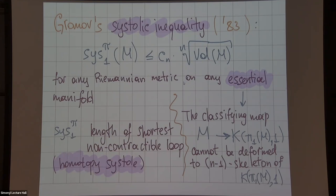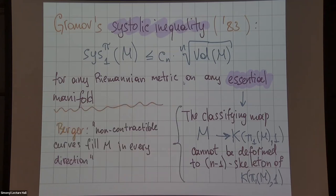Essential here means the rigorous definition says that the classifying map from your manifold to the classifying space of the fundamental group cannot be deformed to the n minus one dimensional skeleton of that space. But the informal way of thinking of this definition was proposed by Gromov.